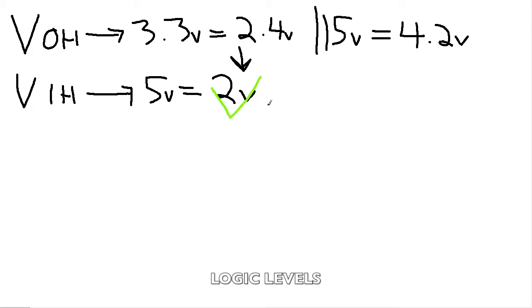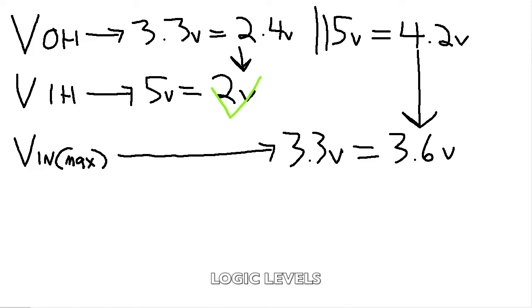Now what happens if we go the other way? Now we're going to be talking about our V in max, specifically our V in max for 3.3 volts. So for 3.3 volts, that's going to be around 3.6 volts, and that's as high as you can go before you blow things up. So if you're feeding that 4.2 volts into your 3.6, bad things happen.